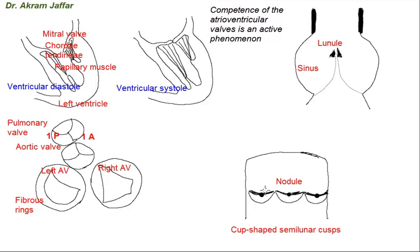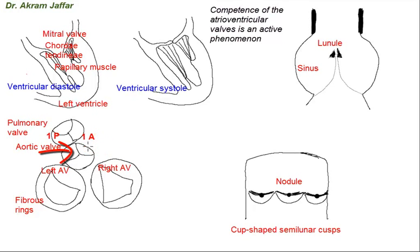These nodules and the thickening of the lunule assist in closing the central areas of the edges of the cusps. In the aorta, two of the sinuses have openings for the coronary arteries: the anterior aortic sinus provides the origin of the right coronary artery, and the left posterior sinus provides the origin of the left coronary artery.